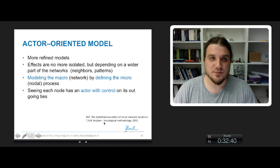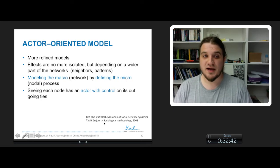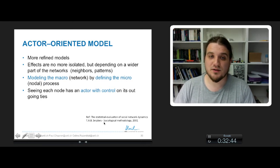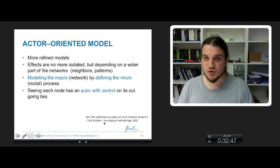Basically, the idea is to see each node as an actor who has the control on its outgoing links, so every node can choose to create a link with one of its neighbors or to destroy an existing link with one of its neighbors.